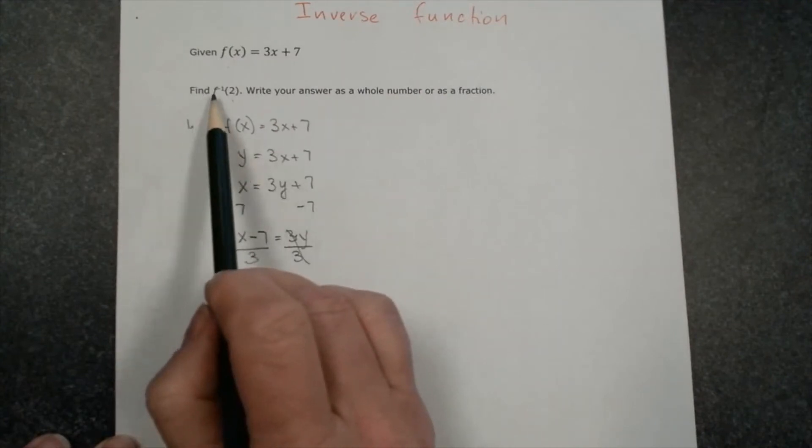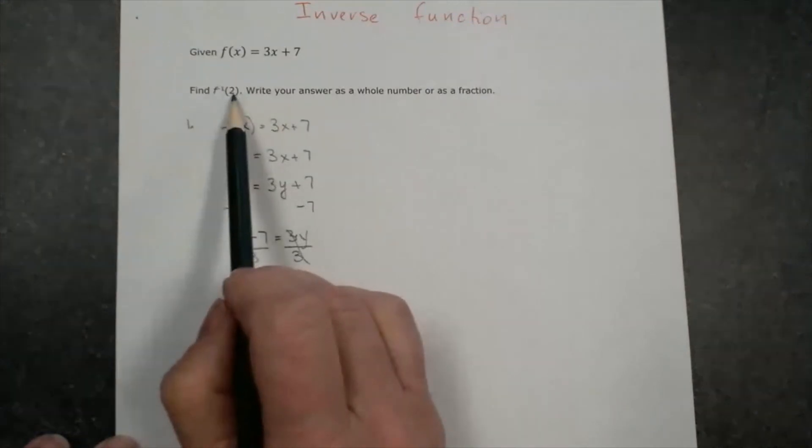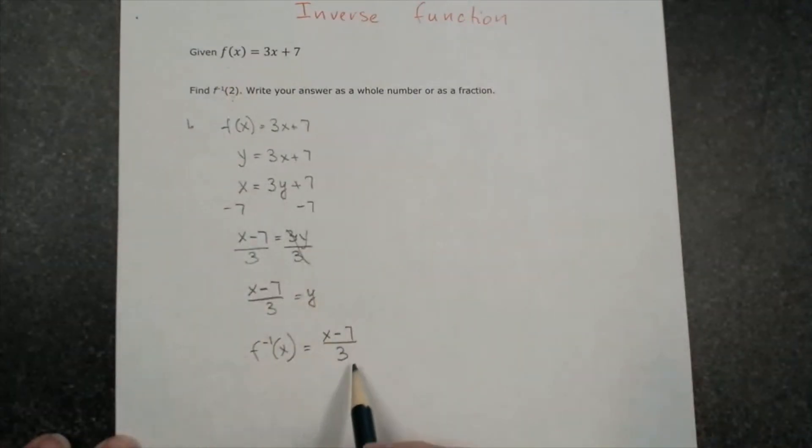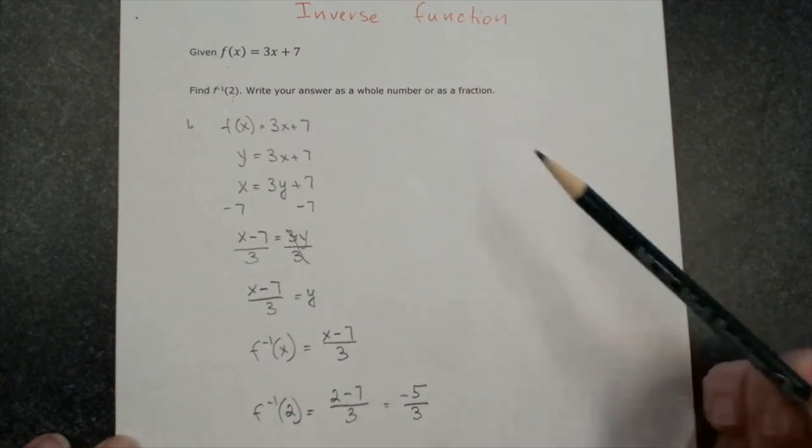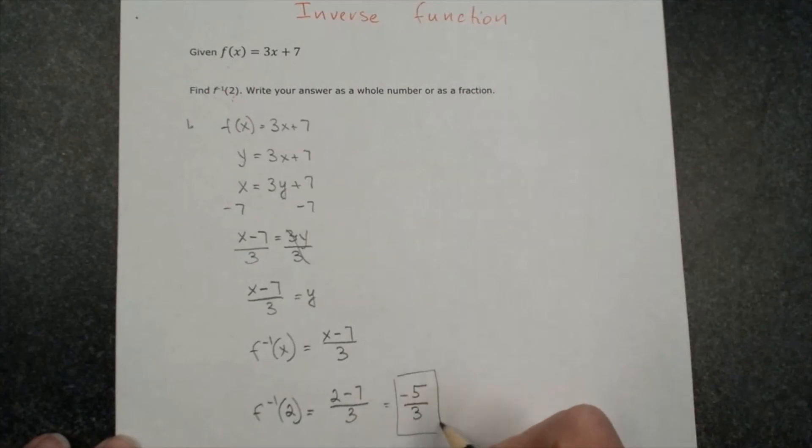Now we need to find f of negative 1 of 2. We have the inverse function already. Now we have to substitute 2 for x. Instead of x, we will substitute 2 minus 7 over 3. 2 minus 7 will be negative 5 over 3. And you have to keep a fraction or a whole number. So this will be my final answer.